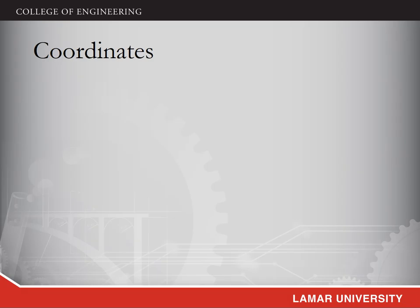Let's first go through the coordinate system in AutoCAD. We know that AutoCAD can draw some figures accurately, and this requires the help of the coordinate system. With the coordinate system, the locations and directions of objects can be placed accurately in one design. In AutoCAD, there are two types of coordinate systems: world coordinate system and user coordinate system.